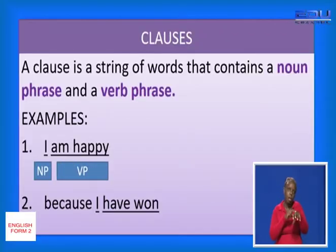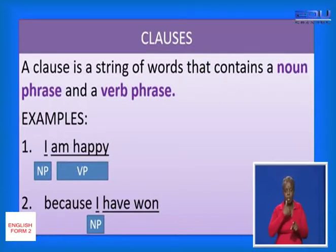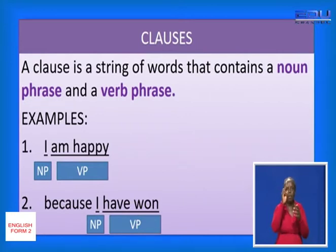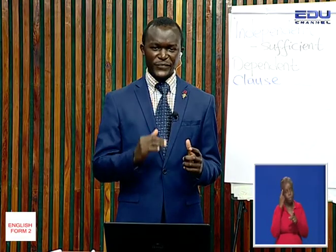So the word 'I' there is the noun phrase, and 'am happy' is the verb phrase. The noun phrase is called the subject, while the verb phrase is the predicate. So that qualifies to be called a clause. The second one — 'because I have one' — 'I' is the subject, and 'have one' is the verb phrase. So if we have a subject and a predicate, a noun phrase and a verb phrase, in a stretch of words, that can be considered a clause.